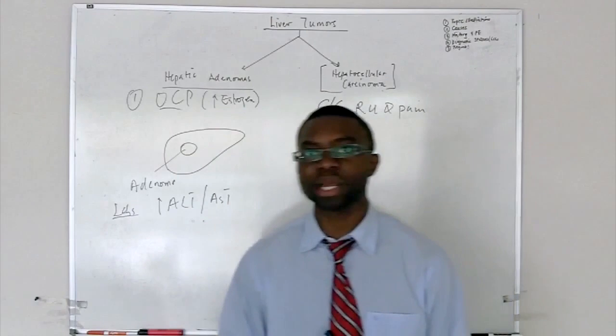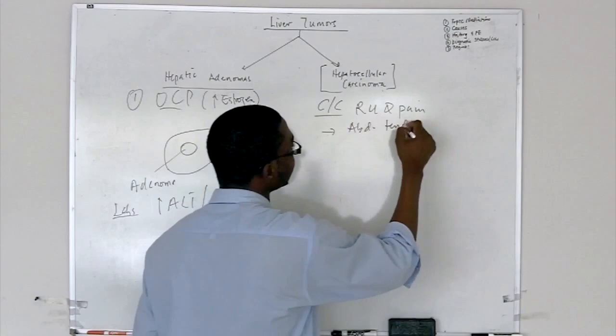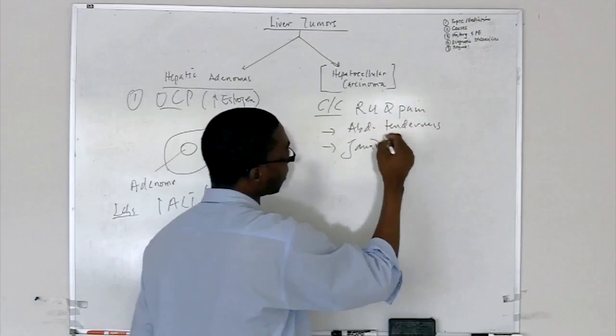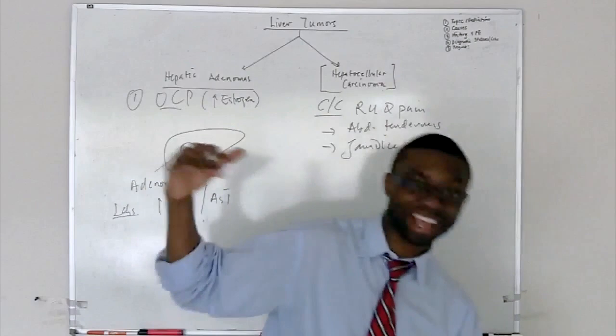Right upper quadrant pain. Abdominal tenderness. They have jaundice because they can't process any bilirubin. All the bilirubin are trying to go through the liver to get conjugated. They can't go through. So, they back up.